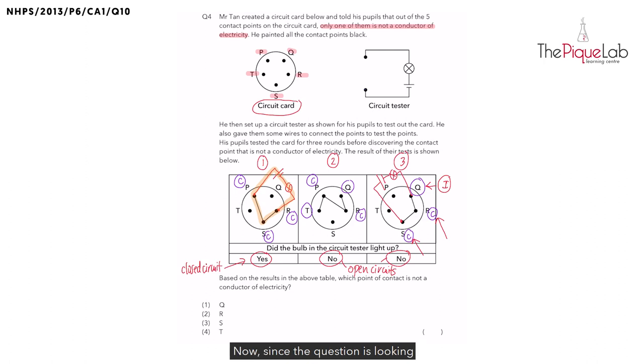Now since the question is looking for which point of contact that is not a conductor of electricity, that gives us the answer as point Q, option number 1.